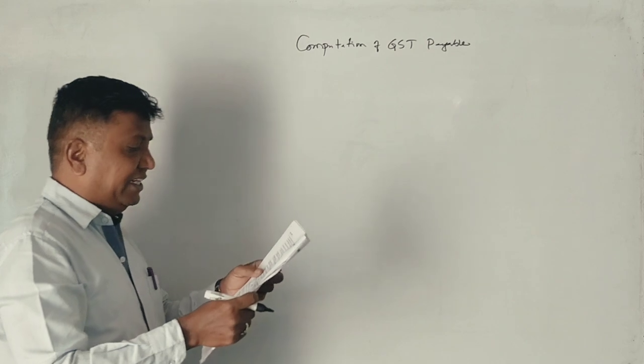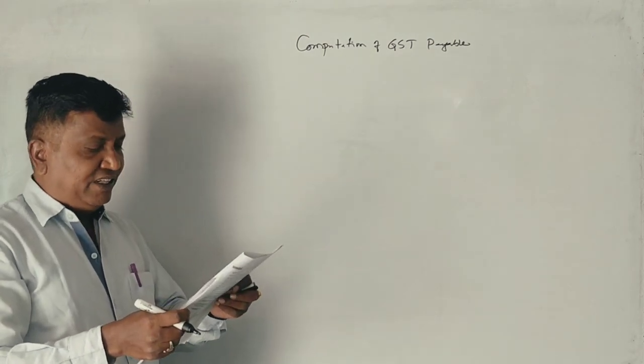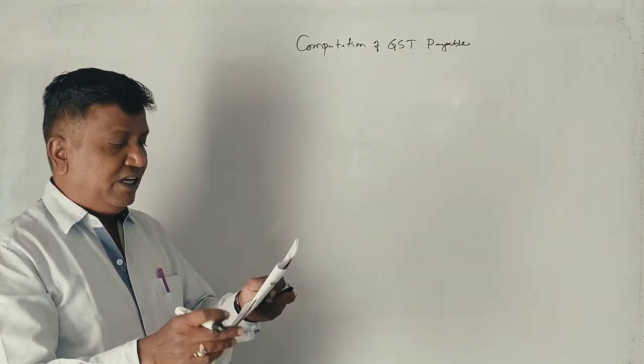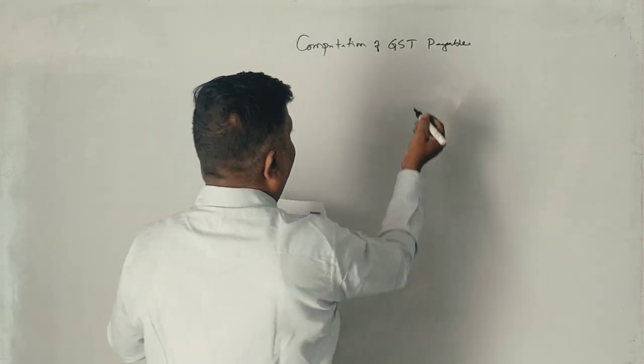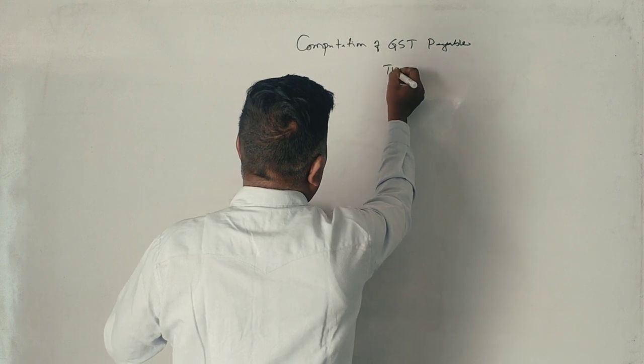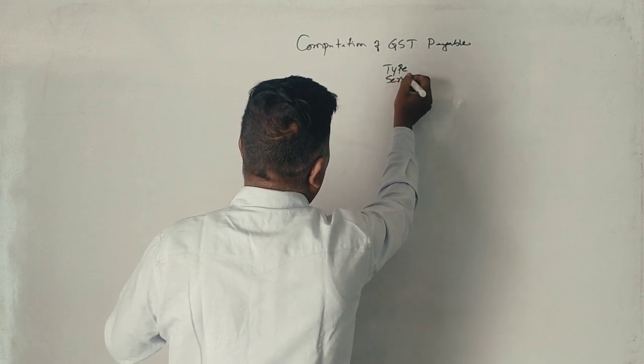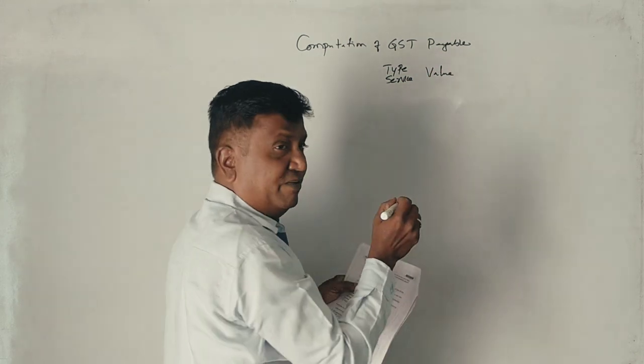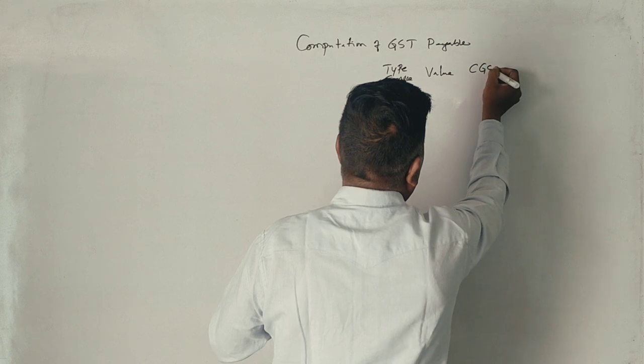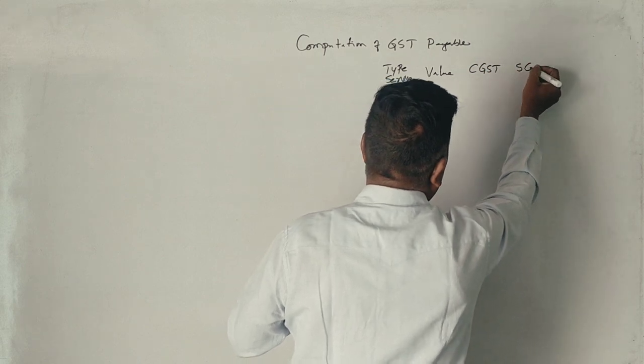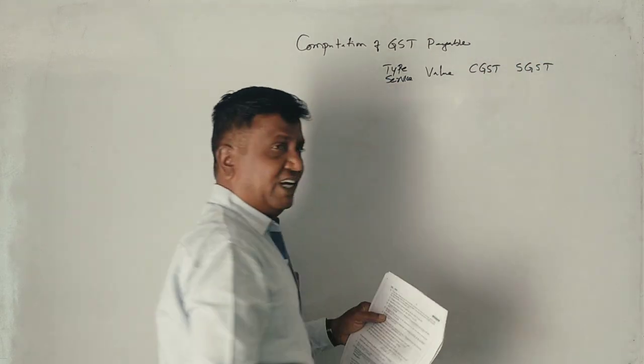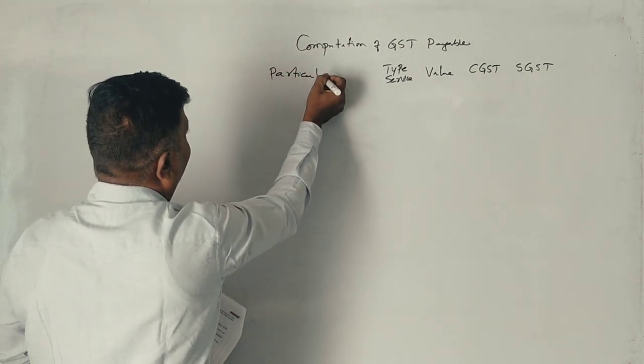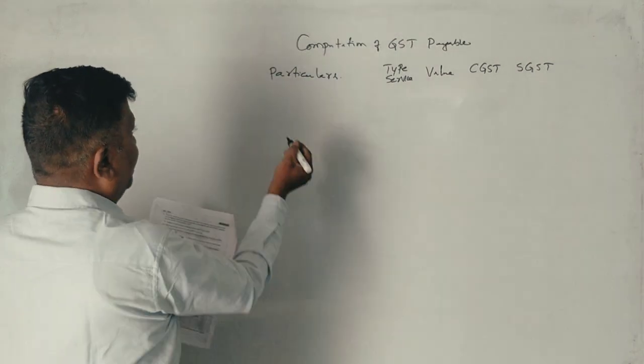Now, within the state. First, type of service, then the value, then central GST, then state GST. It's a particular system. Now, first point.